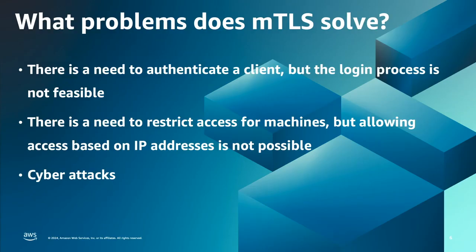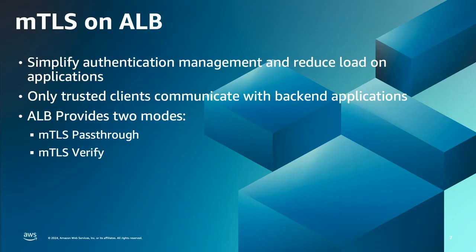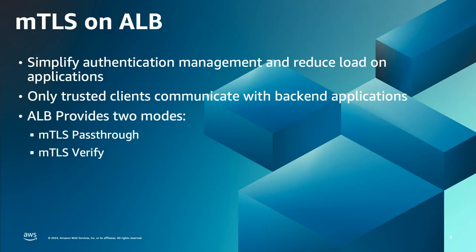Now that we understand mutual TLS, let's see how it is implemented on ALB. Previously, mutual TLS was not supported on ALB and customers had to use other services such as API Gateway. But at the last re:Invent, we announced the support of mTLS on ALBs. With this announcement, ALB can handle the authentication management and reduce the load on the backend applications. When you enable it, only trusted clients with issued certificates can access the applications running behind that ALB.